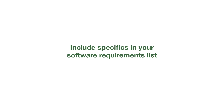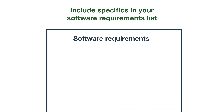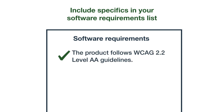The next way to check a vendor for accessibility is to make sure the accessibility requirements you have are in writing. If you're using a request for proposal, or RFP, include the accessibility expectations you have. This makes it easier to hold the vendor accountable. For example, 'the product follows WCAG 2.2 Level AA guidelines' is better than 'the product is accessible.'